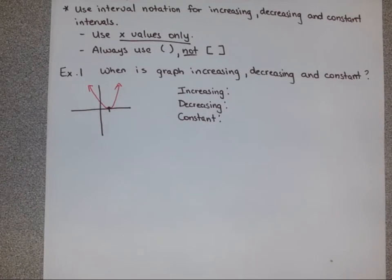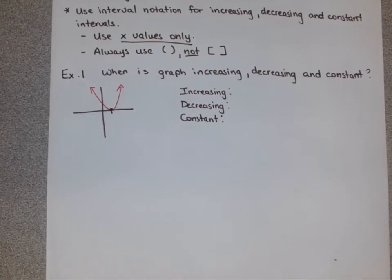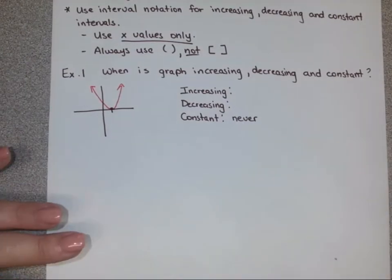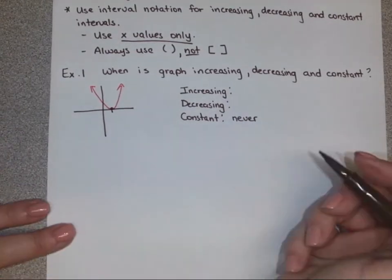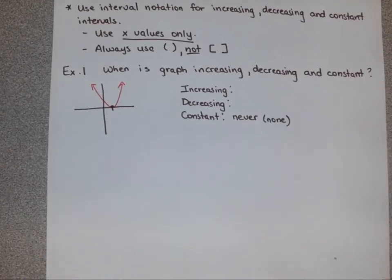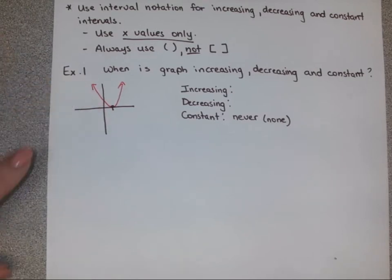This is kind of like the structure of your homework — it'll ask you three parts: when is this graph increasing, when is it decreasing, and when is it constant. Well, one of these is never — it's never constant, so you would just say never or none. If we look at the graph from left to right, what's it doing first? It's decreasing first. Remember I said only look at the x values.